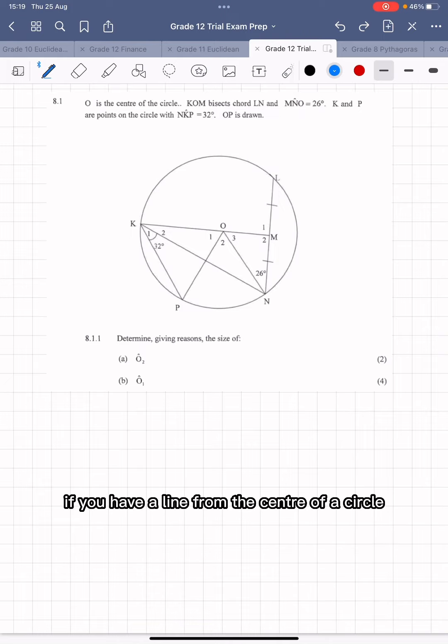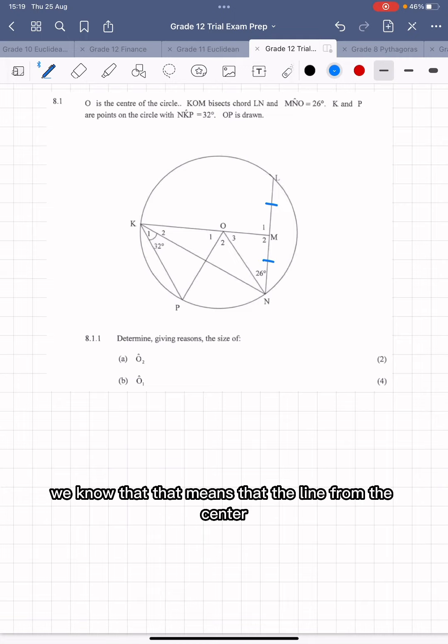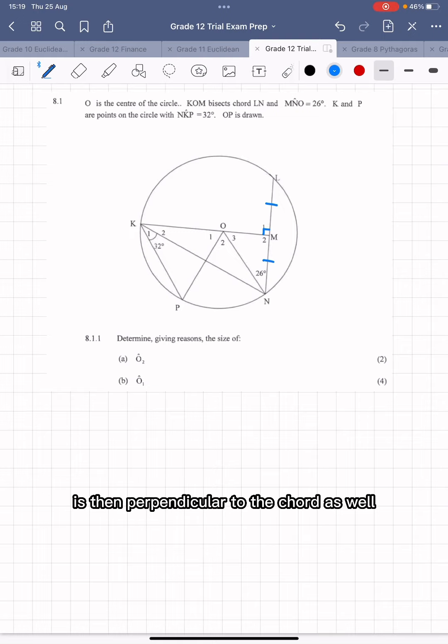Now, we know that if you have a line from the center of a circle that bisects a chord like we have here, we can see that because they've indicated that also in symbols on the diagram. We know that that means the line from the center is then perpendicular to the chord as well.